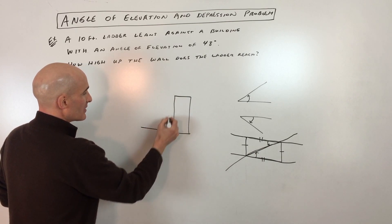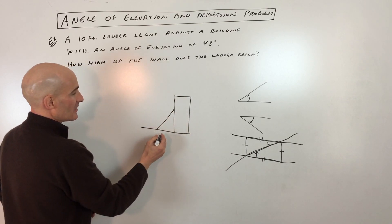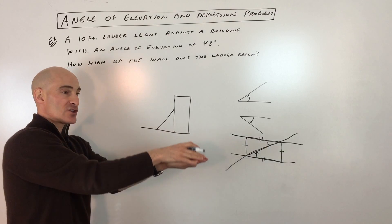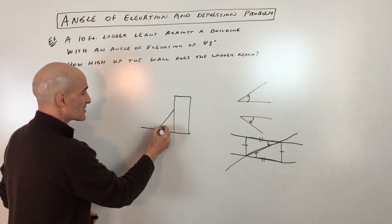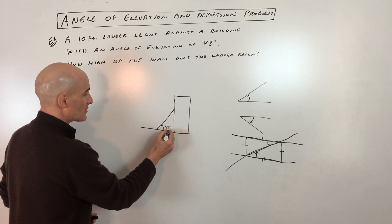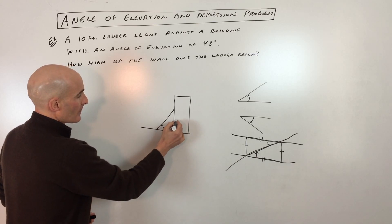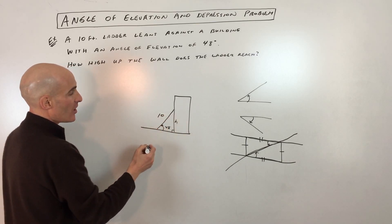And here's the ground here and here's the ladder like this. And so angle of elevation up from the horizontal, that's going to be your elevating. 48 degrees. This is a right angle and this is how high up it reaches and the ladder is 10 feet tall.